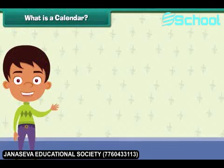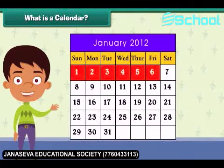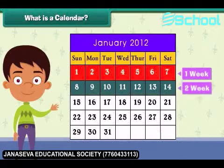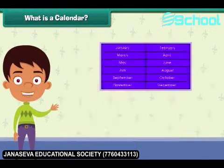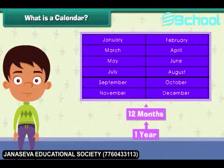What is a calendar? Look at this calendar — you see days written in some fashion. A calendar groups days into weeks, weeks into months, and months into a year. Each day is different.